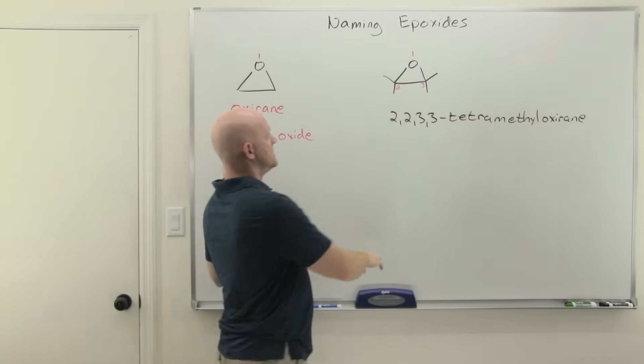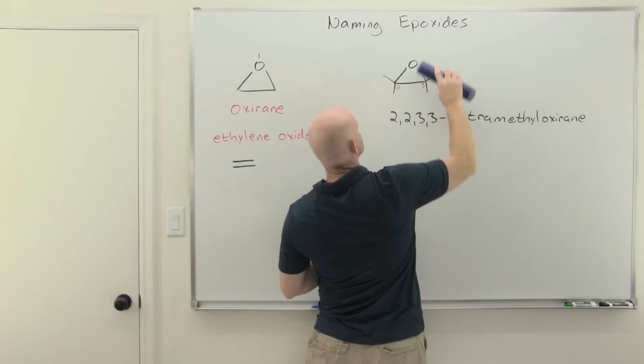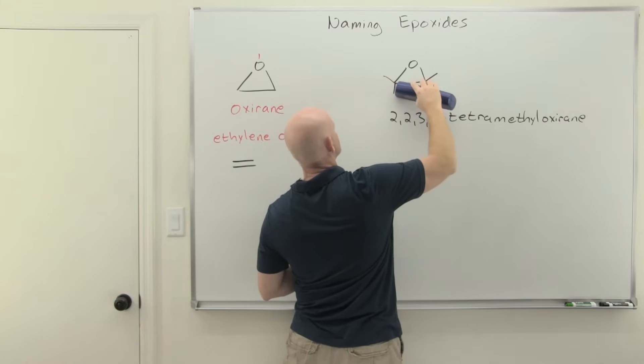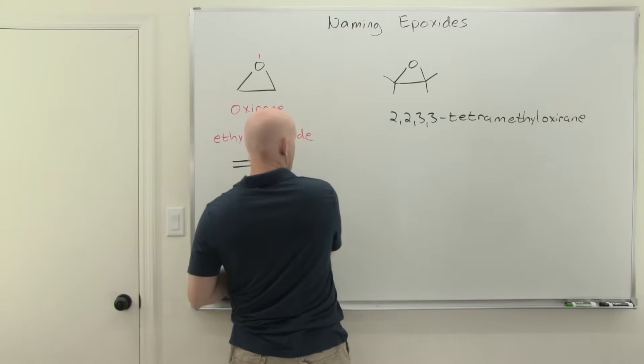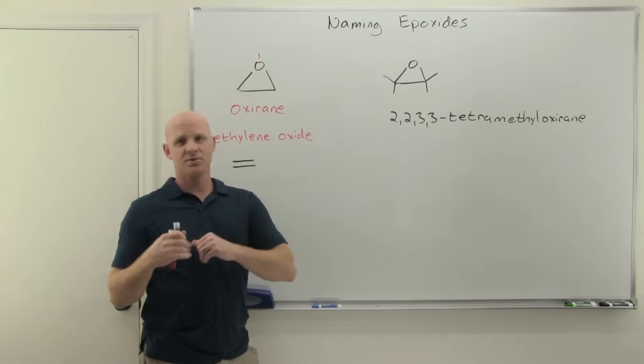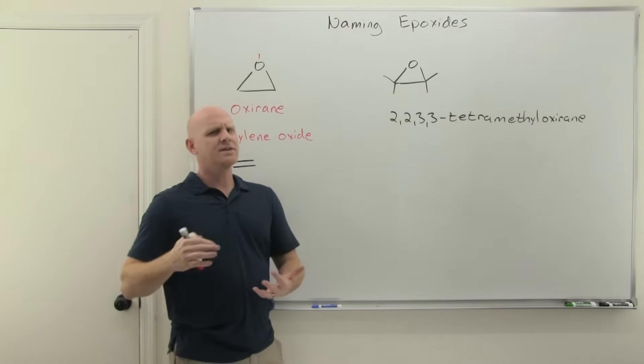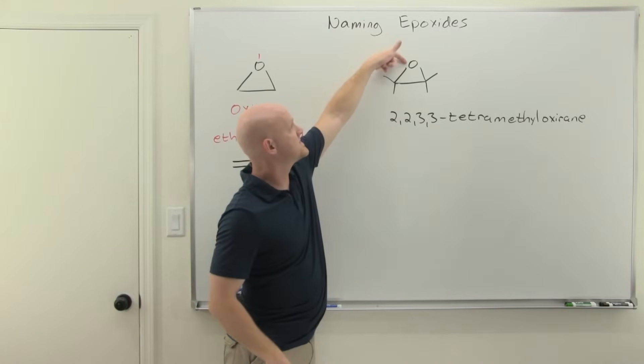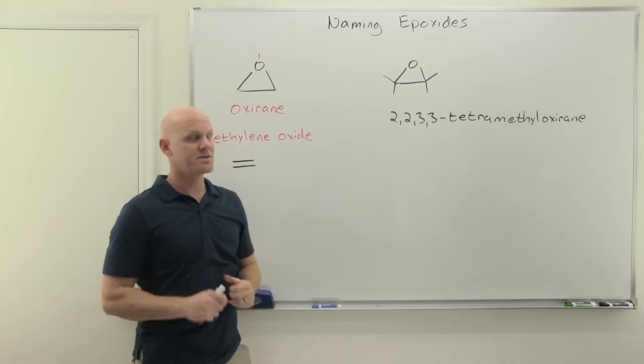Another way to go about this looks at the oxygen of the epoxide actually as a substituent, not part of the main chain. So in this case, you want to find your longest continuous carbon chain. And normally we wouldn't let that be like part of the ring and not part of the ring. But here we view this as a substituent and we're going to ignore the ring for a second.